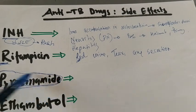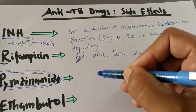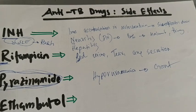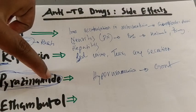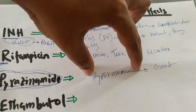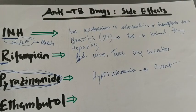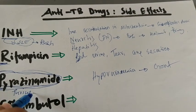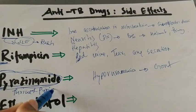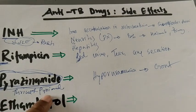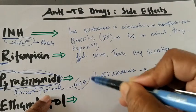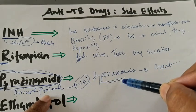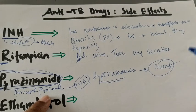Next is Pyrazinamide. Pyrazinamide is associated with a big word — hyperuricemia — also a big condition. From hyperuricemia, patients develop gout. Another way to remember: Pyrazinamide starts with P, just like Purine and Pyrimidine. From purine and pyrimidine metabolism, uric acid is produced; high levels of uric acid cause hyperuricemia, and the clinical presentation is gouty arthritis.